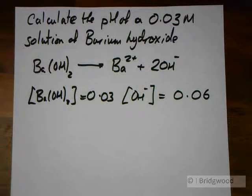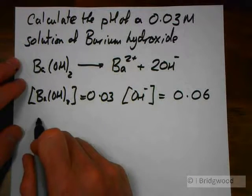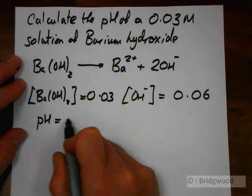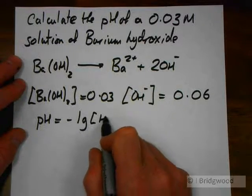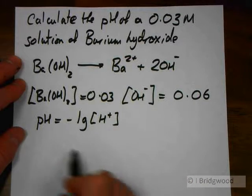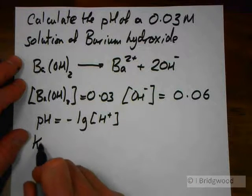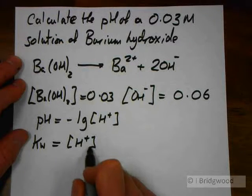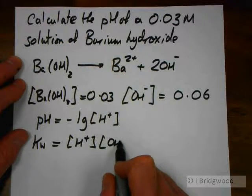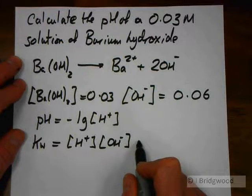Now we're going to need not only our equation pH is negative log of concentration of hydrogen ions, but we're also going to need our Kw equation as well, because we need to calculate the concentration of hydrogen ions from that.